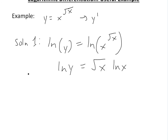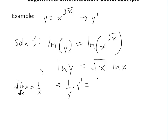Now we apply the derivative using implicit differentiation. Taking the derivative of ln y, we know the derivative of ln x with respect to x equals 1 over x, so this gives us 1 over y. Using chain rule, the derivative of y is just y prime. Now for the right side we apply the product rule. The derivative of square root of x, using the product rule, is basically 1 over 2 square root of x.